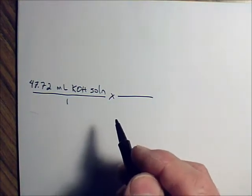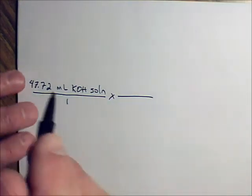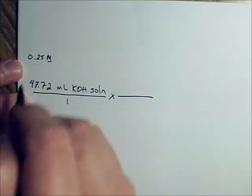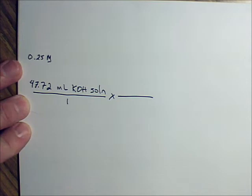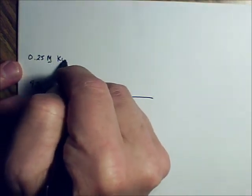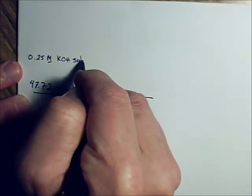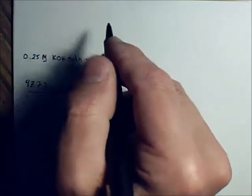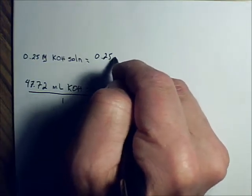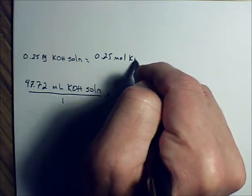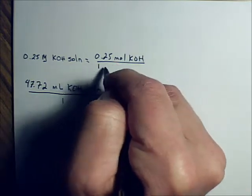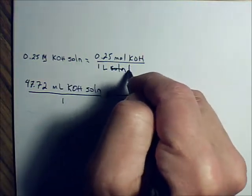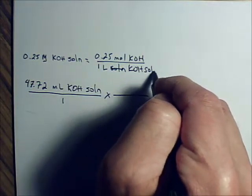You need to know that when you have 0.25 molarity or molar concentration of KOH solution, that is the same thing as 0.25 moles of KOH over 1 liter of solution. And actually, it's KOH solution.